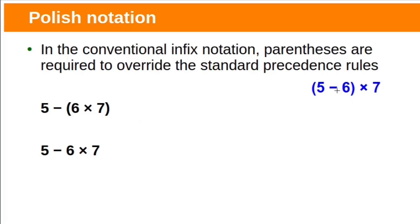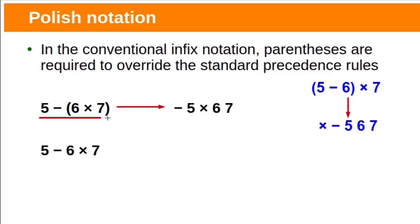Taking the above example: 5 minus 6, result multiplied by 7. If we move the parentheses or remove them completely, it changes the result. This version is written in prefix like this, whereas the previous one is written differently. In prefix notation, the order of evaluation is conveyed by the sequence of operators and operands, so parentheses are not required.